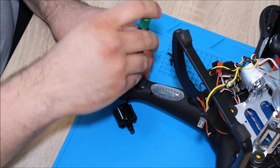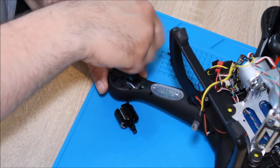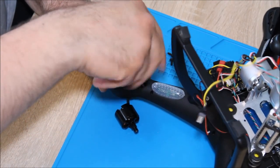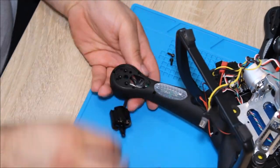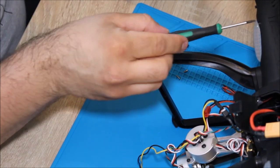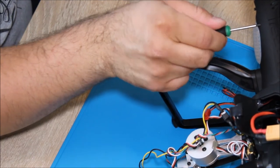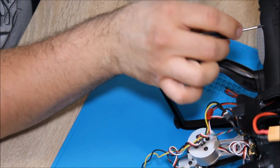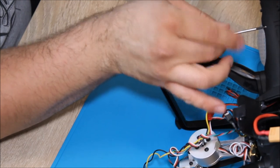We now start removing these little screws with the Phillips driver again. The motor is loose now. And we're removing these ones as well here.